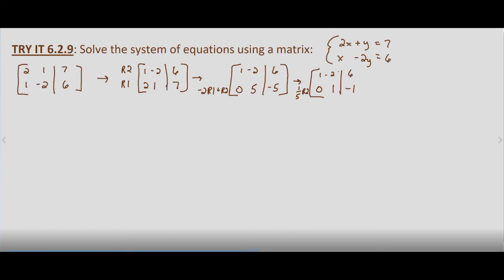Now, effectively, what this means is that y equals negative 1, because we have 0x plus 1y equals negative 1. So we have it in row echelon form. At this point, we have a couple options. We could use row operations to get negative 2 to be 0, or what we're doing for now is we're going to rewrite our corresponding system of equations.